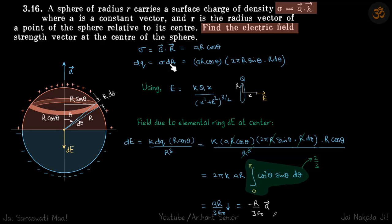So dq is σ dA, so dA area of this ring is r dθ times 2π r sin θ. So r dθ into 2π r sin θ times σ, sigma is ar cos θ.